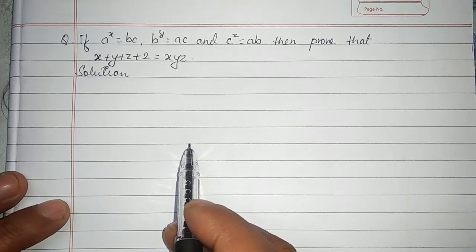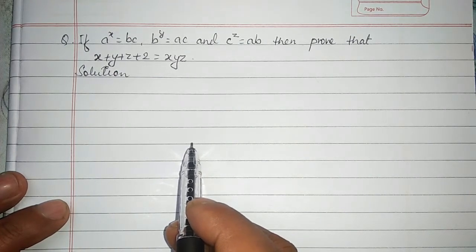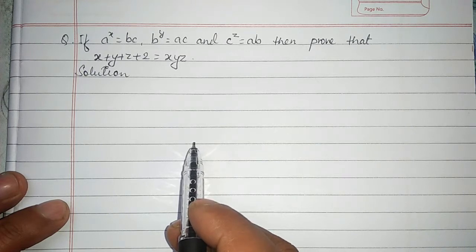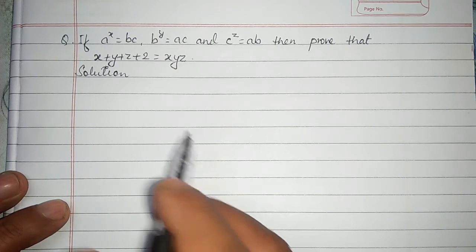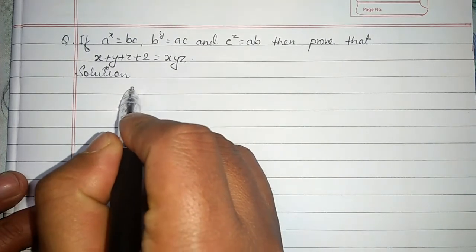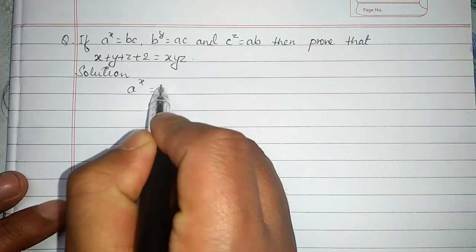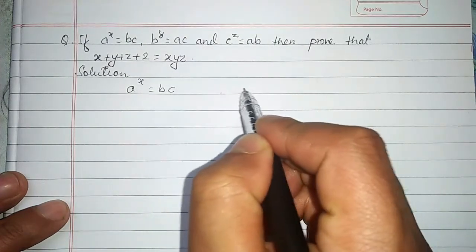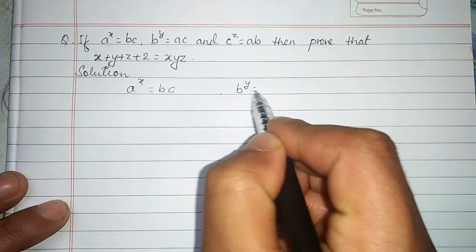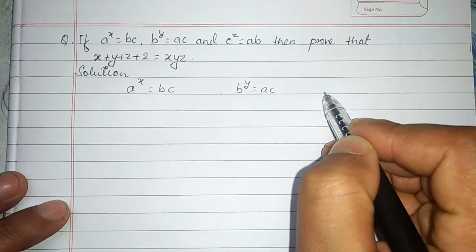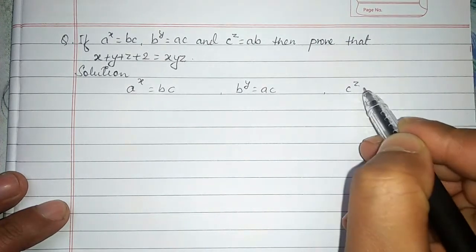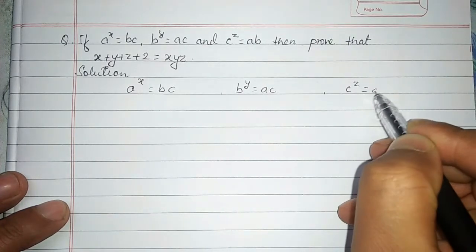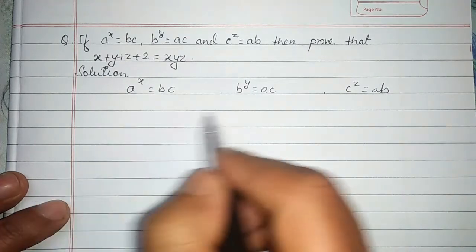If a to the power x equals bc, b to the power y equals ac, and c to the power z equals ab, then prove that x plus y plus z plus 2 equals xyz. Solution: the given conditions are a to the power x equals bc, b to the power y equals ac, and c to the power z equals ab.